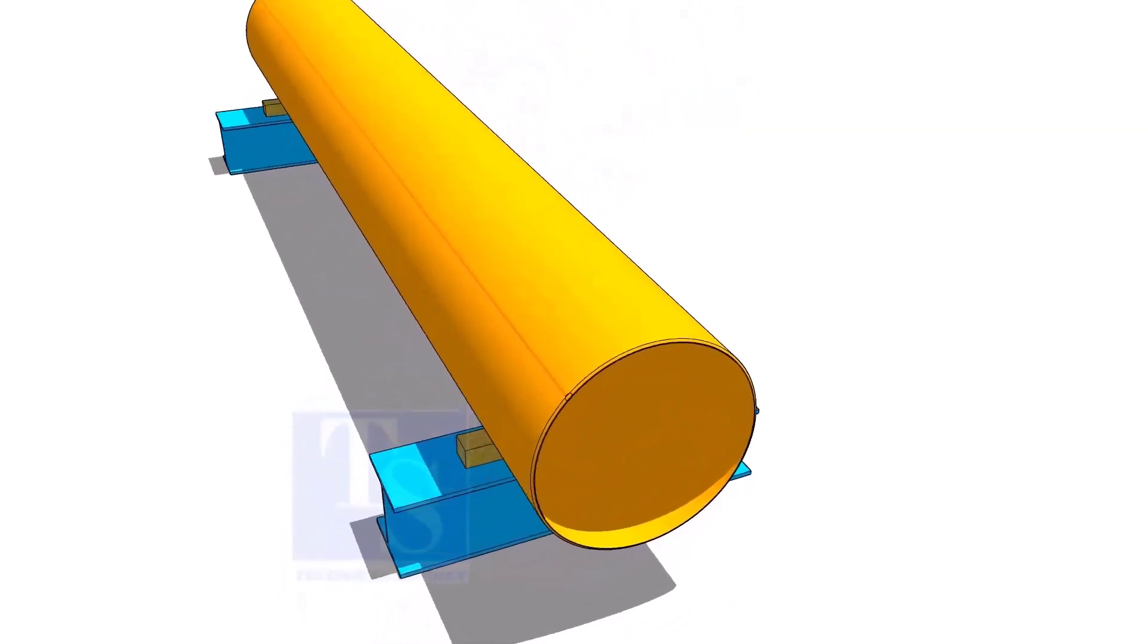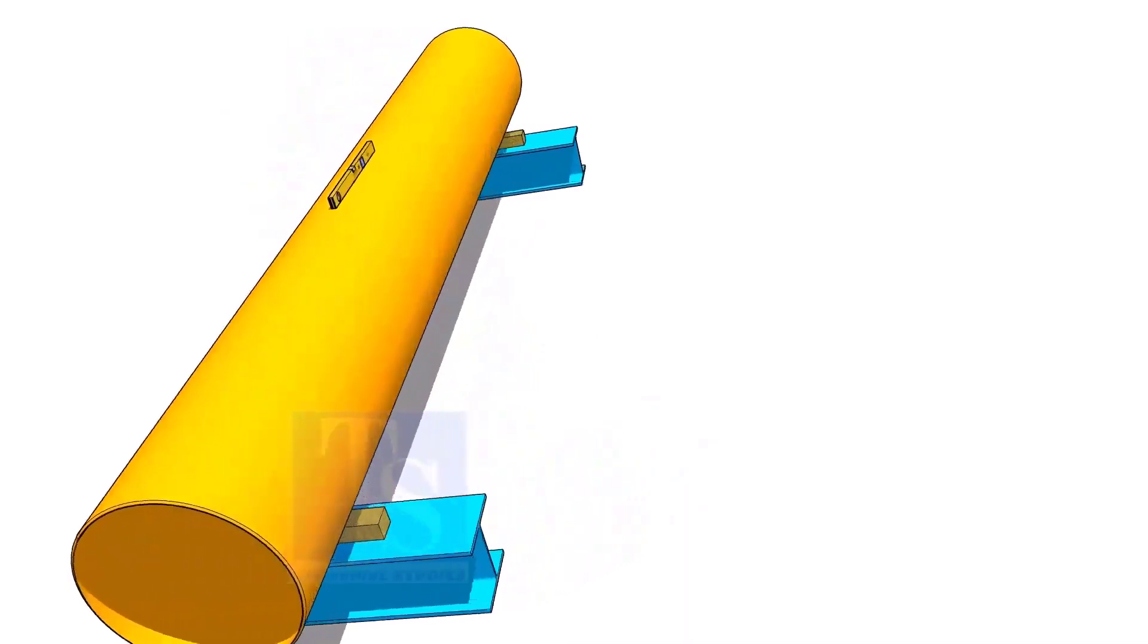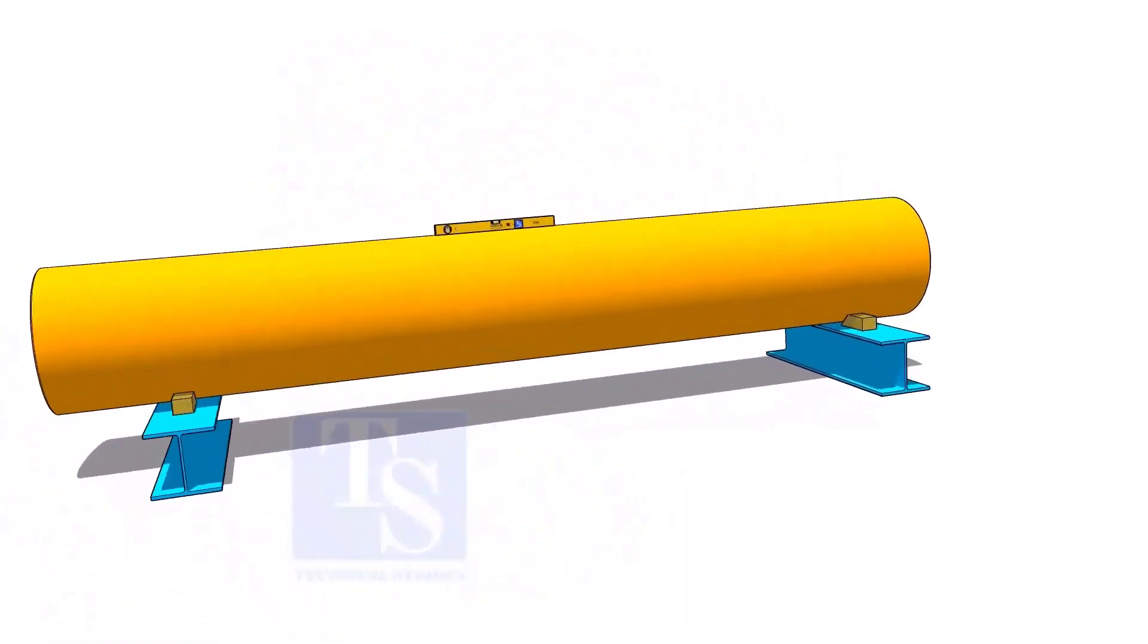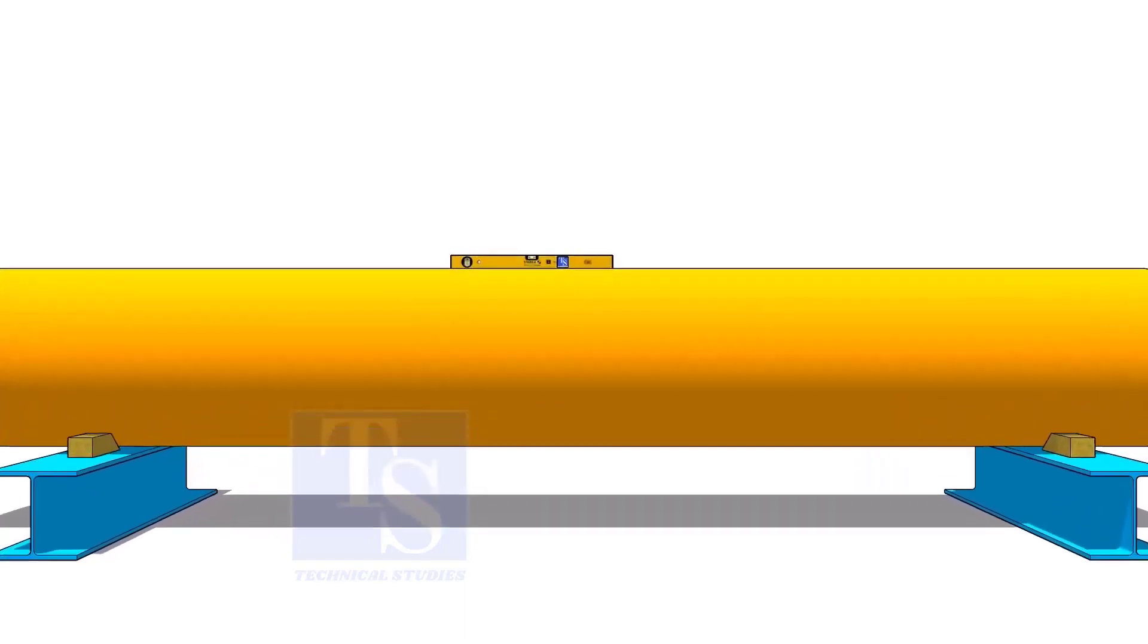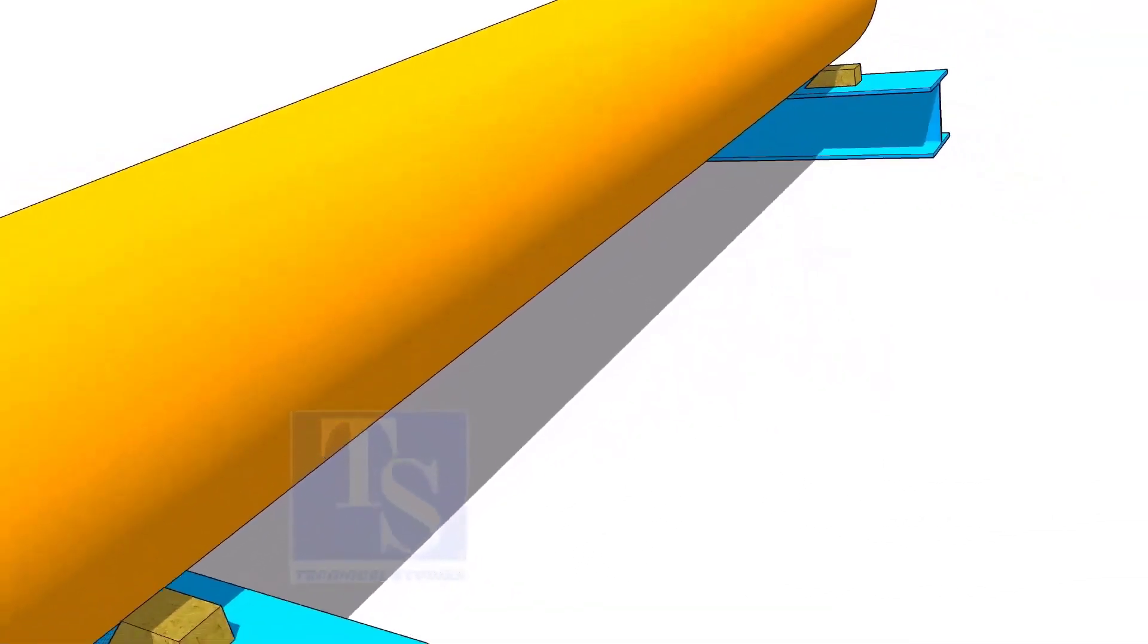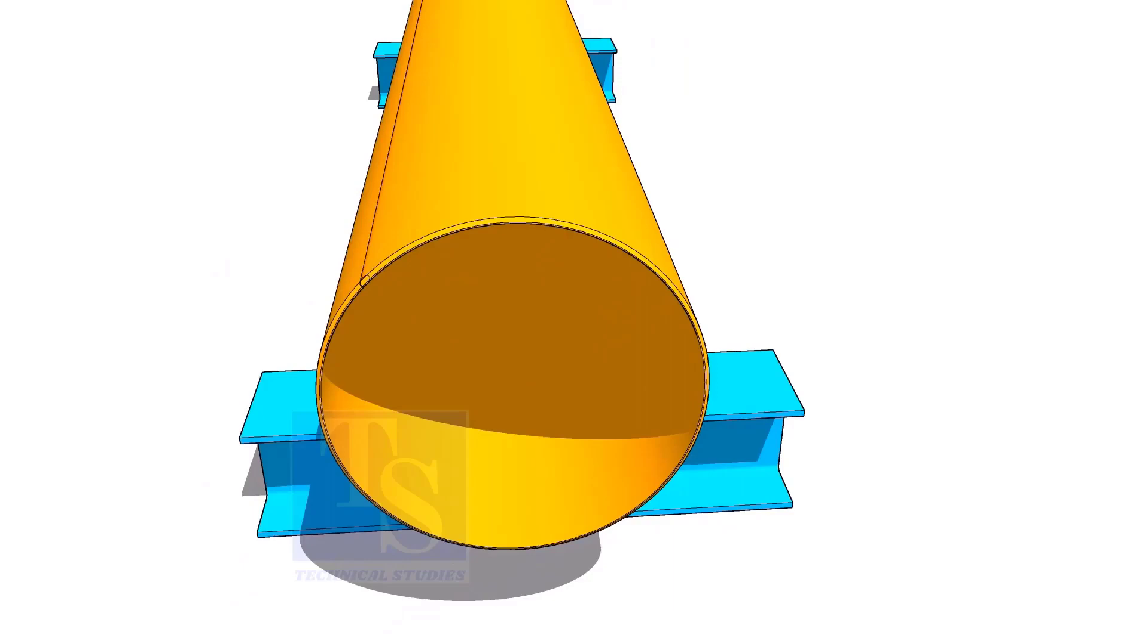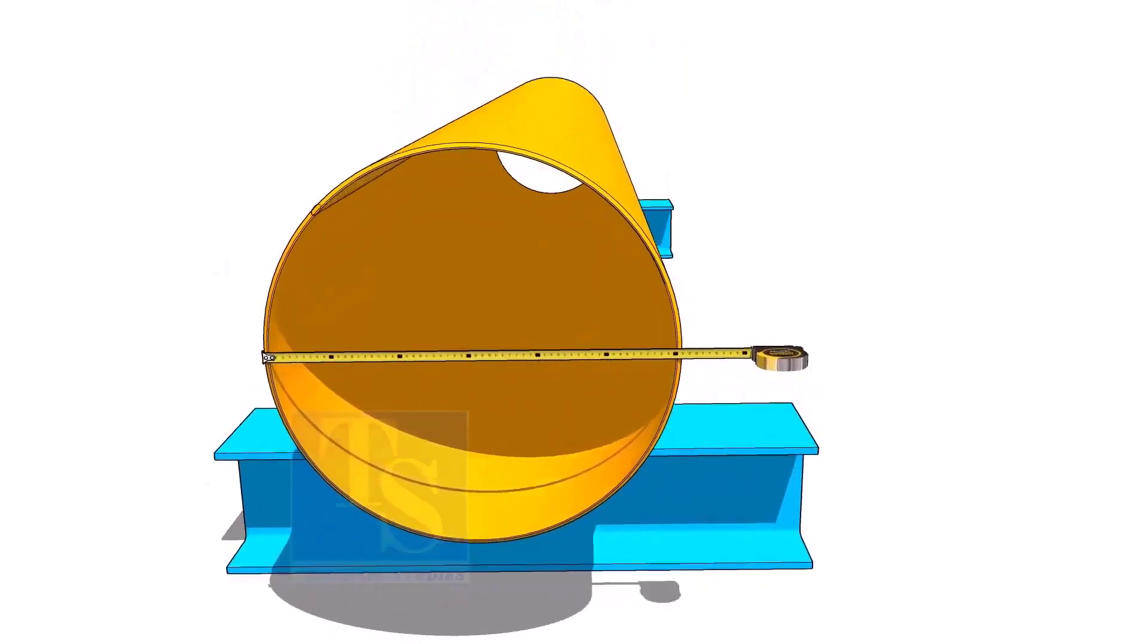Level the pipe and provide proper supports as shown. Check the diameter of the pipe. If the thickness of the pipe is thin or the diameter is large, sometimes the pipe may be in an oval shape.